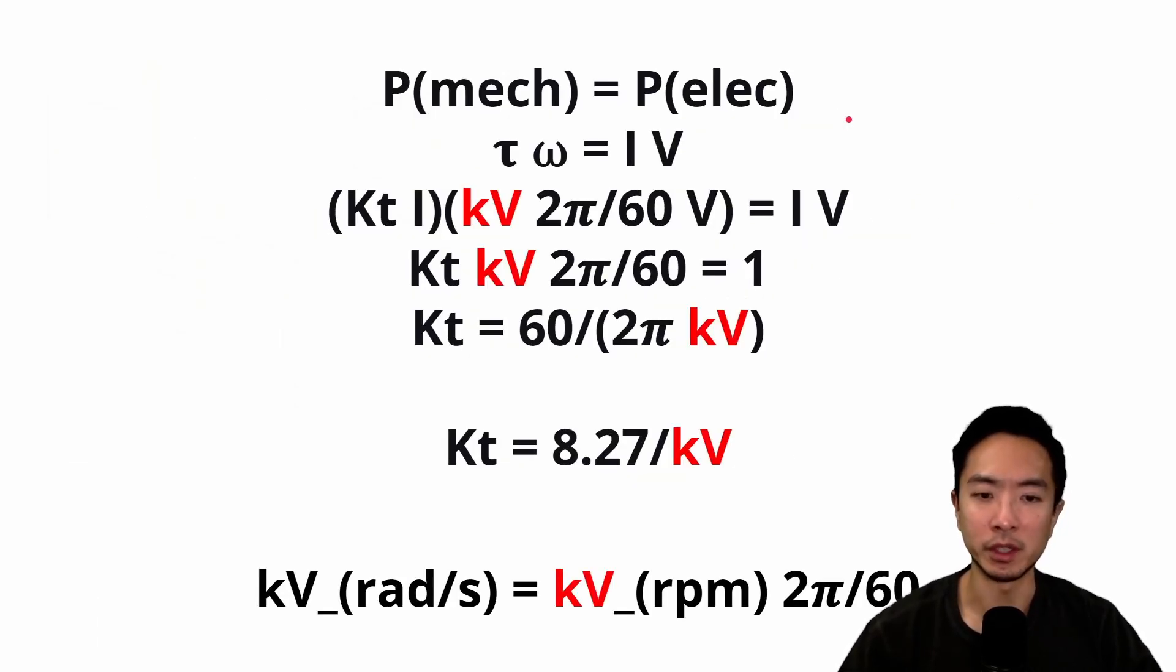So you might be wondering where does the 8.27 come from? If you do a power balancing between the mechanical and electrical power and substitute everything, we're going to do some conversion for the KV between radians per second and RPM. So if you go through all the steps, you're going to end up getting the 8.27 by doing these conversions.